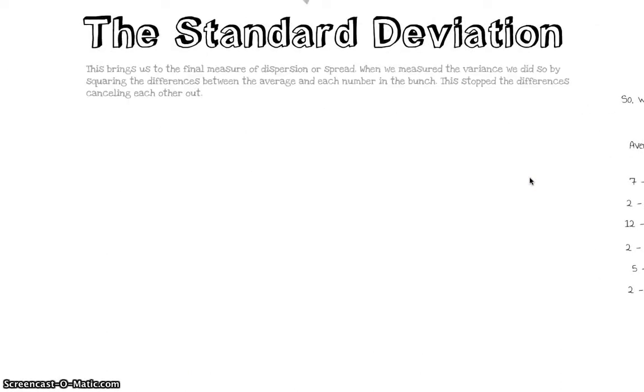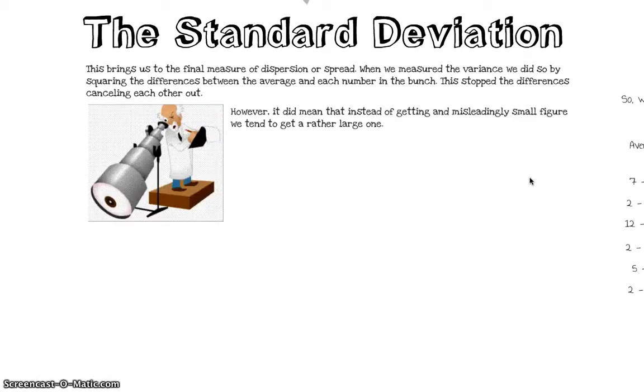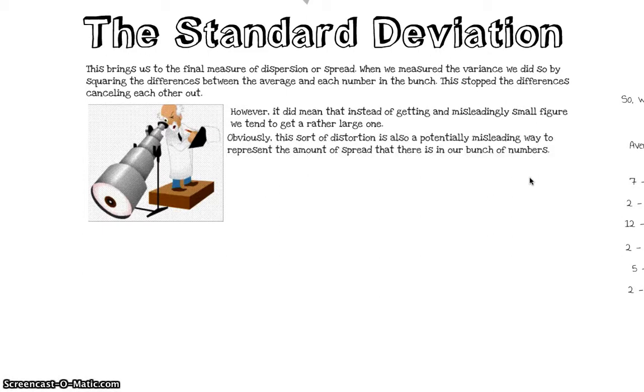Alright, so that takes us on to the standard deviation - that's the final measure of dispersion we're going to look at today. Now when we calculated the variance, we stopped the differences cancelling each other out by squaring them. But that meant instead of getting a misleadingly small figure, we got a rather large one - it was 13.3 recurring rather than the 10, which even that was too large.